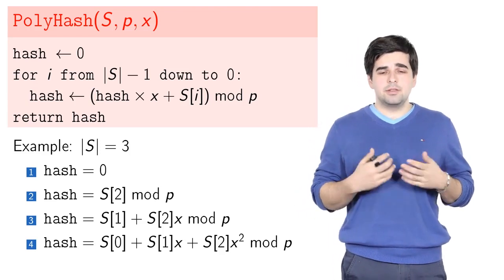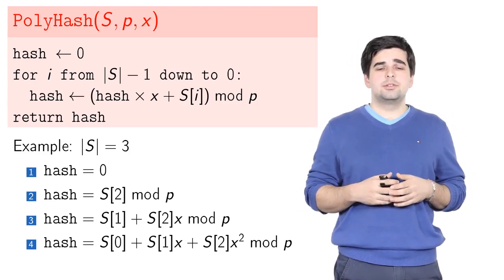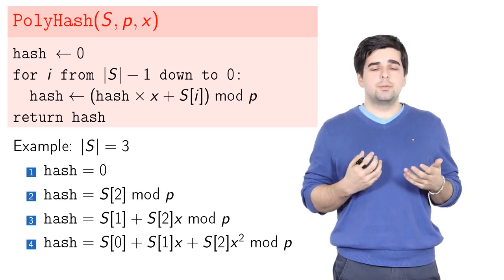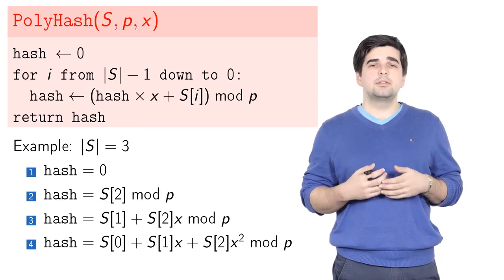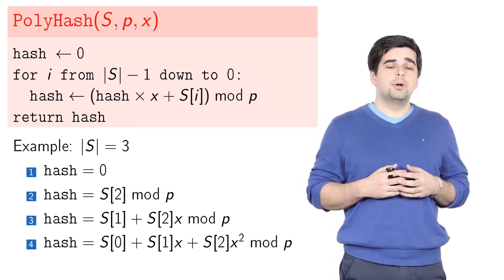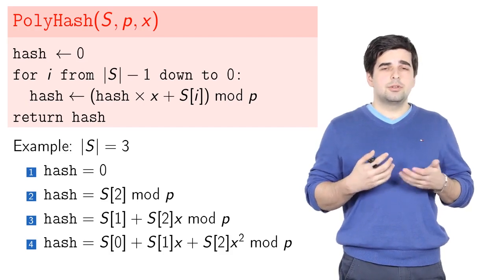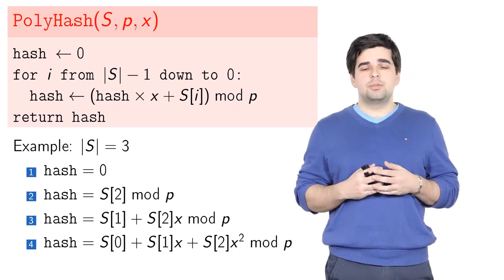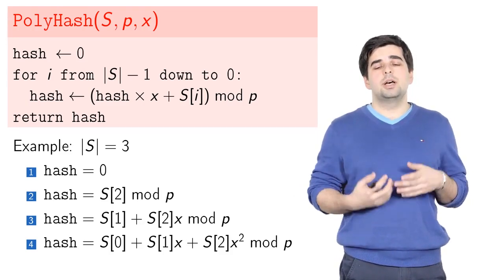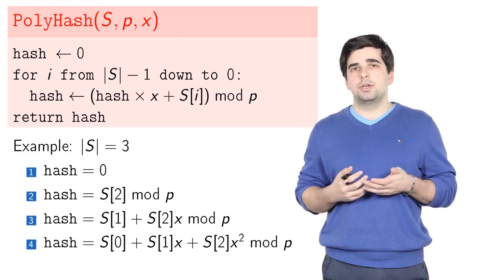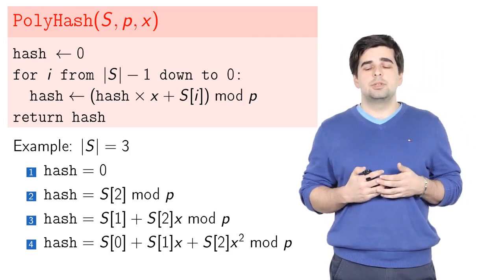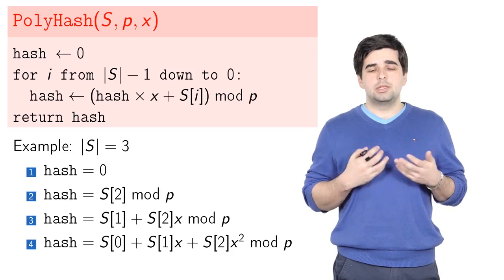In the last iteration, i is decreased to 0. We multiply the current value by x and what we get is s[1]×x + s[2]×x². Then we also add s[0] to the sum and take everything modulo p. The result is s[0] + s[1]×x + s[2]×x² exactly as we wanted—a polynomial hash function with prime p and parameter x.